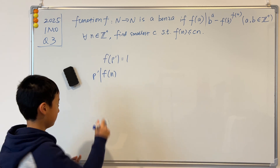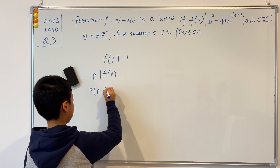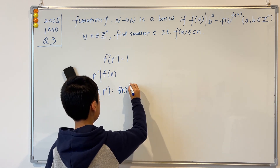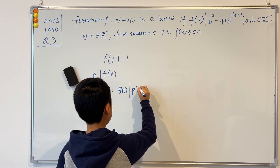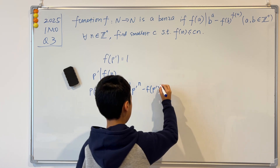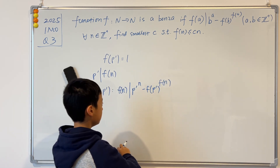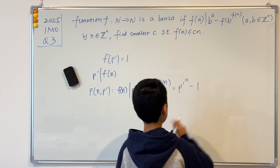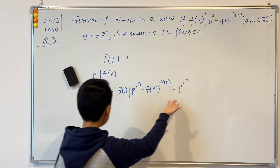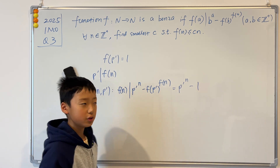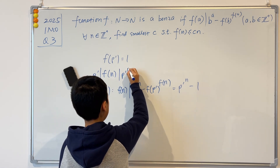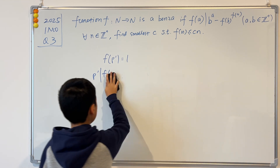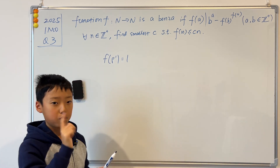I'm going to make up a new property: Property(n, p'). This is f(n) divides p'^n minus f(p')^(f(n)), which equals p'^n minus 1, since f(p') = 1. Since f(n) divides this expression and p' divides f(n), then p' must also divide p'^n − 1. This is impossible, so f(n) can only have one prime factor, which is 2.